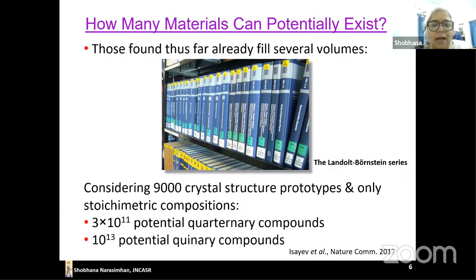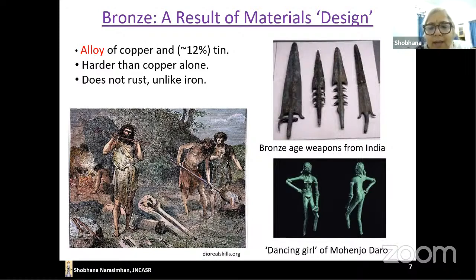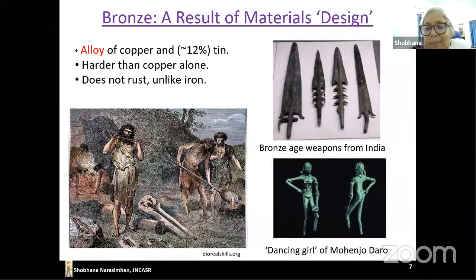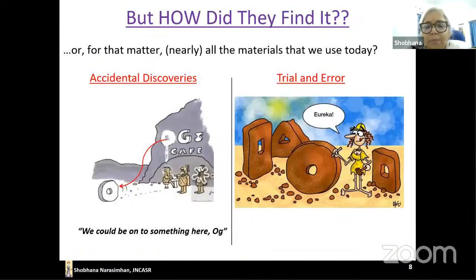I'm particularly fascinated by bronze. The Bronze Age is a prehistoric age — bronze is an alloy of copper and tin which is harder than copper alone and does not rust unlike iron. There are famous bronze artifacts from India, including the Dancing Girl of Mohenjo-daro, made in the Indus Valley Civilization. What fascinates me is: how did they know they could make this alloy of copper and tin with superior properties?